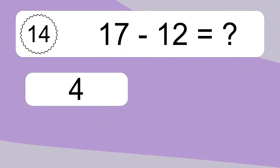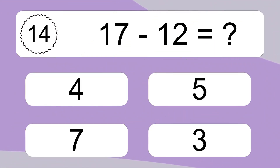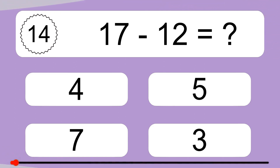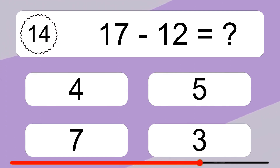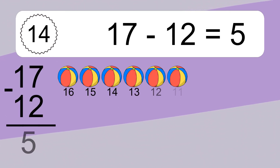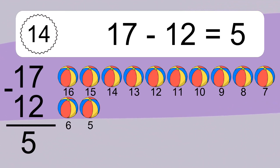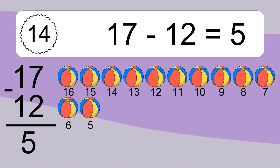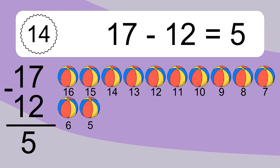17 minus 12 equals what? 17 minus 12 equals 5. Let's count it. 16, 15, 14, 13, 12.